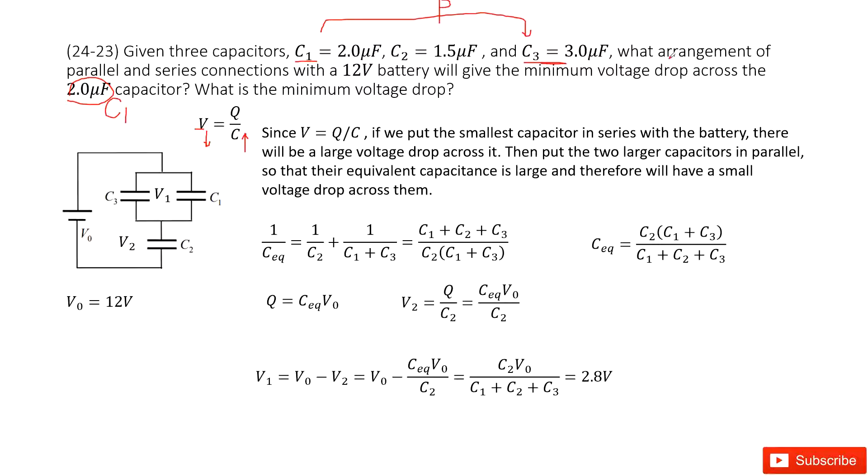The requirement asks us to do the arrangement of parallel and series connections, so one capacitor must be in series connection. We choose C2 as the series connection. So now we've determined the arrangement: C1 and C3 in parallel connection, C2 in series connection. This satisfies the requirement for minimum voltage drop across the C1 capacitor.